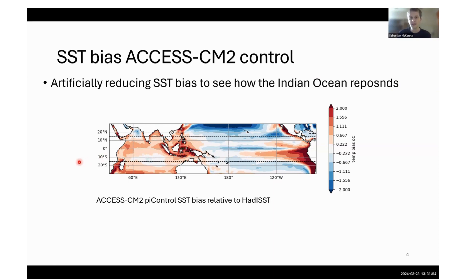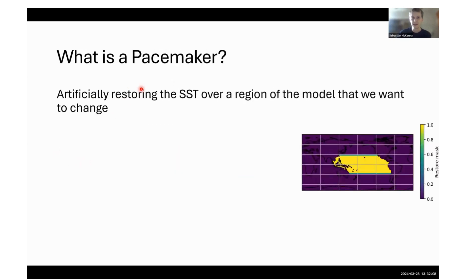This is relative to HadSST. We want to find out, if we artificially reduce this SST bias, how does the Indian Ocean respond? We've done this by conducting some pacemaker experiments, where we artificially restore the SST over this region in the tropical Pacific to what we want.